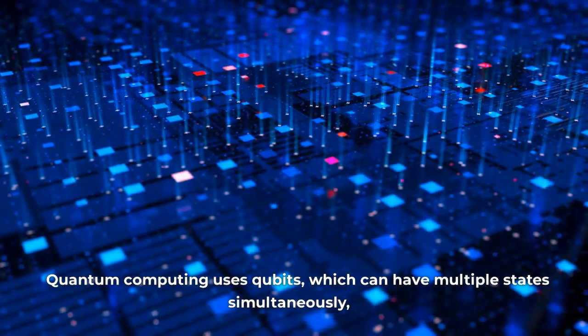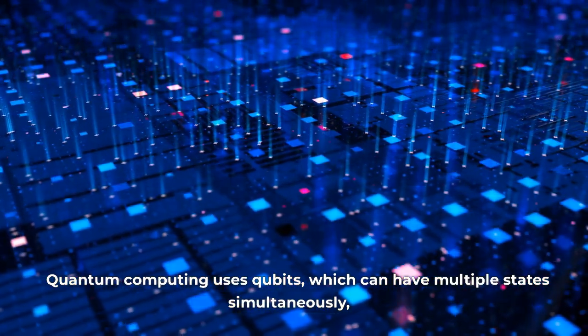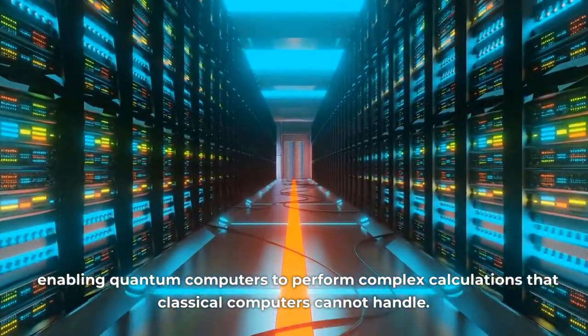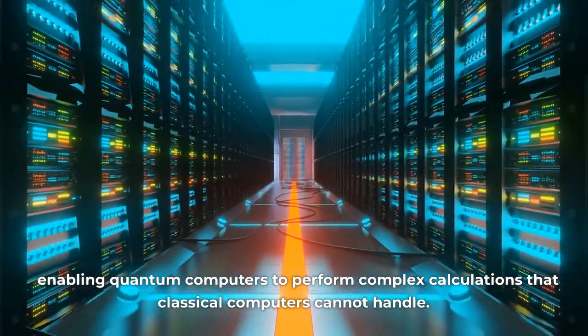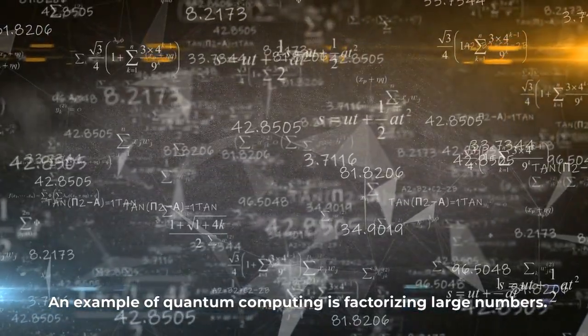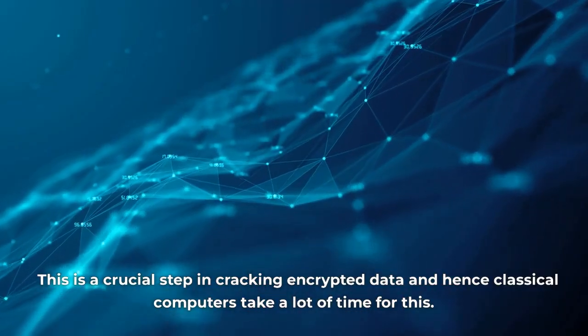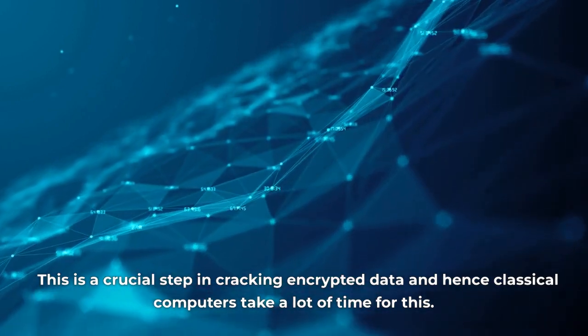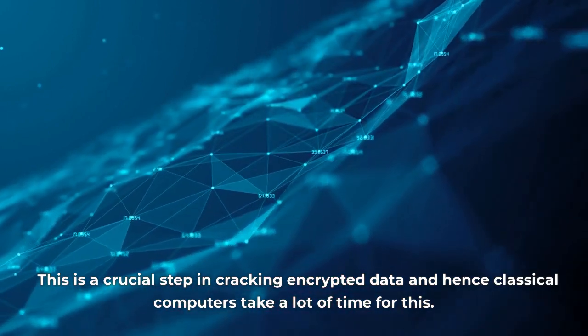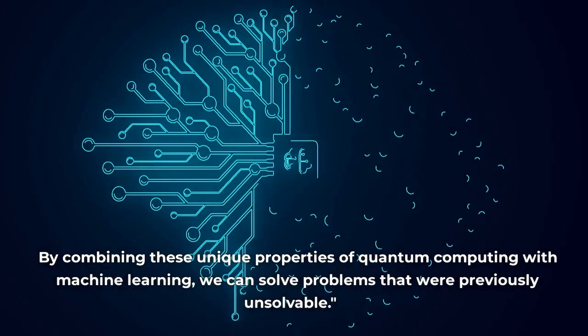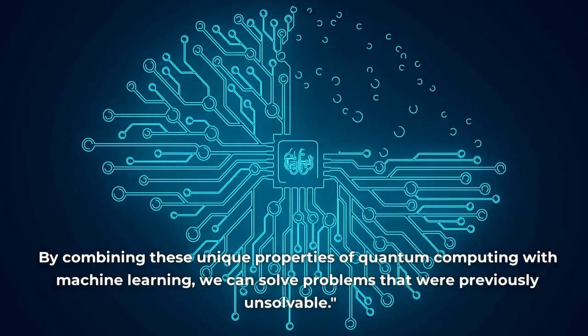Quantum computing uses qubits, which can have multiple states simultaneously, enabling quantum computers to perform complex calculations that classical computers cannot handle. An example of quantum computing is factorizing large numbers. This is a crucial step in cracking encrypted data and classical computers take a lot of time for this. But with quantum computing, this can be done much faster. By combining these unique properties of quantum computing with machine learning, we can solve problems that were previously unsolvable.